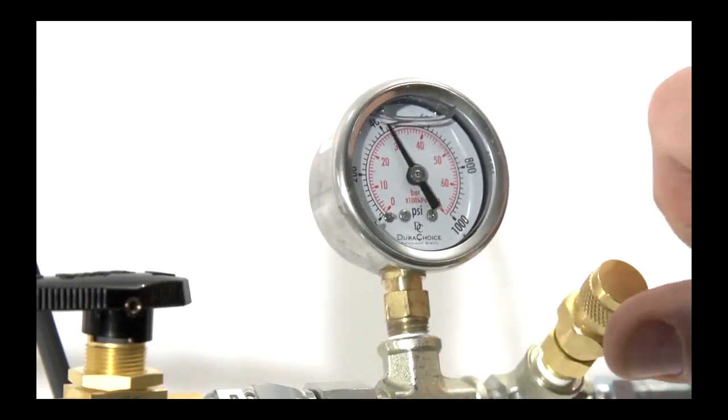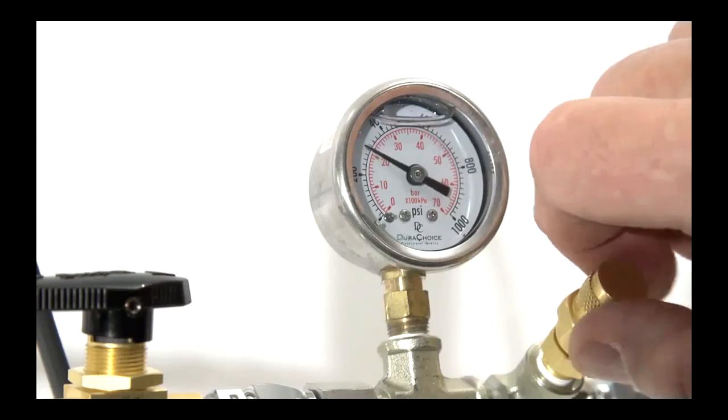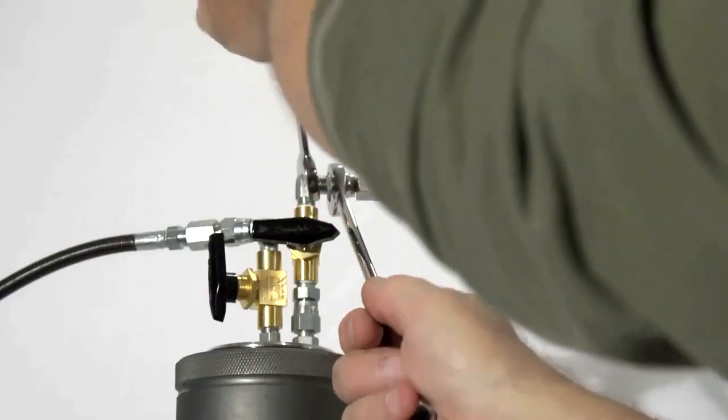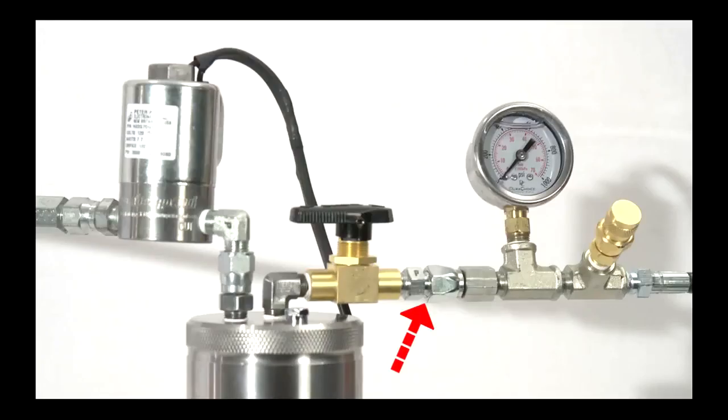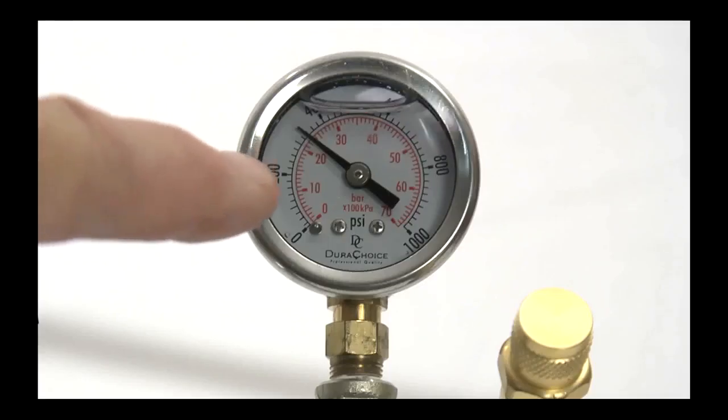Now close the recapture tank valves and open the relief valve to depressurize the line. Then close the relief valve. The recapture line is disconnected from the extractor and connected to the collector. Open the recapture tank valves to pressurize the recapture line.